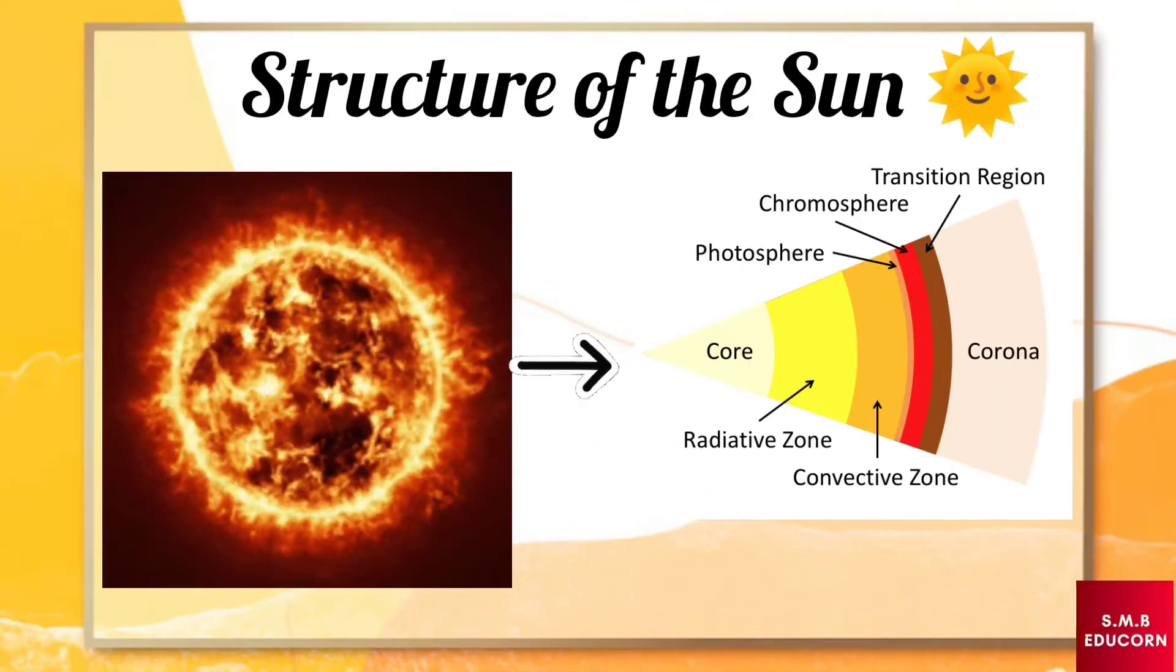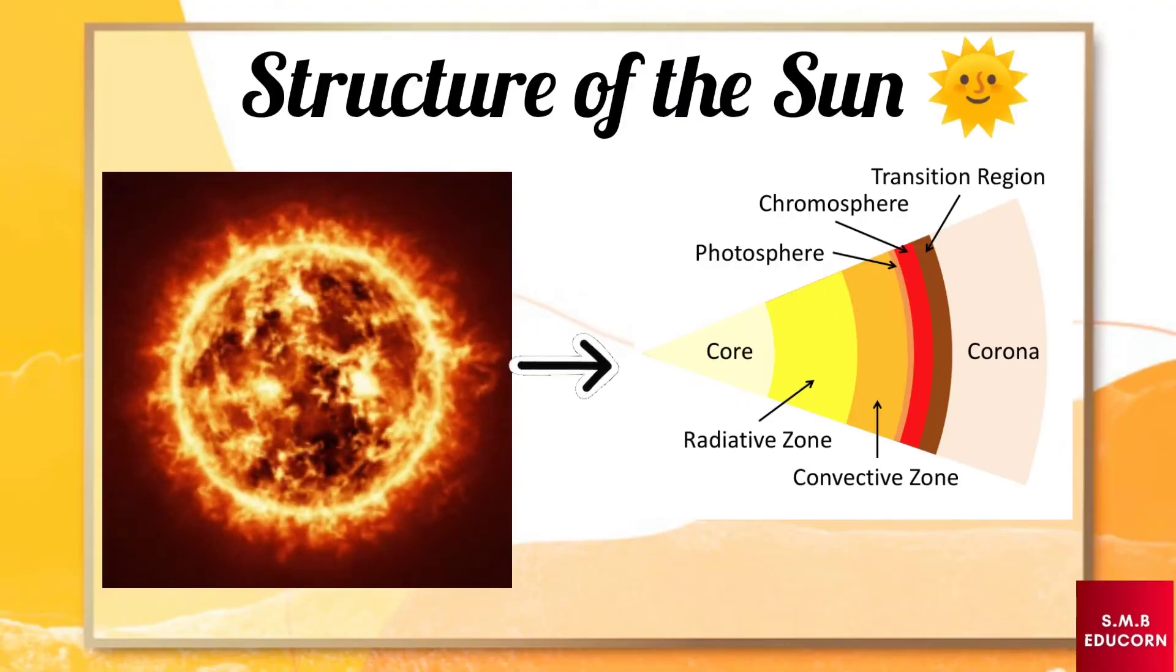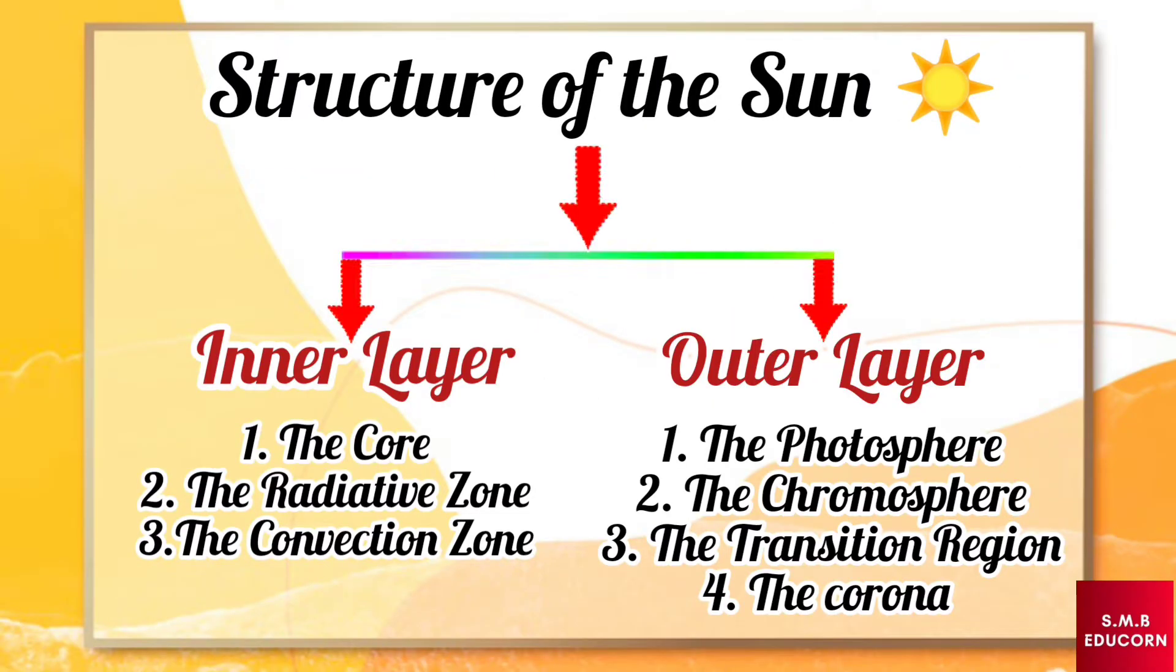Do you know that the structure of sun is made up of several layers which is divided into two primary parts, the inner layer and the outer layer. The inner layer of sun consists of the core, the radiative zone and the convection zone. And the outer layer of sun includes the photosphere, the chromosphere, the transition region and the corona.